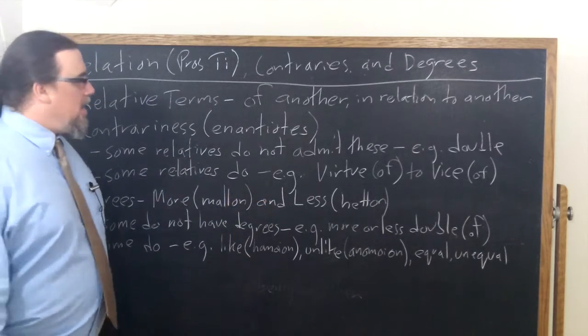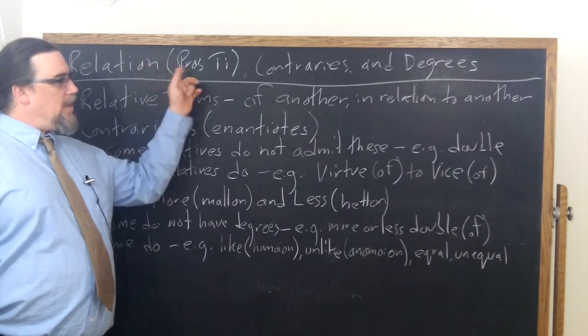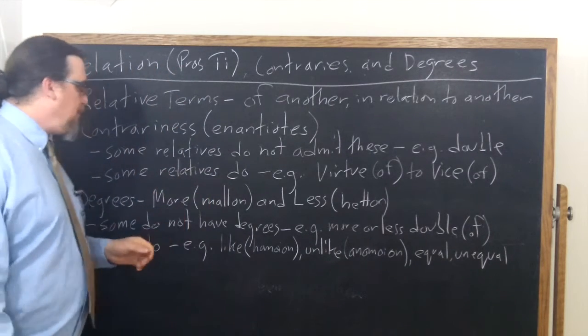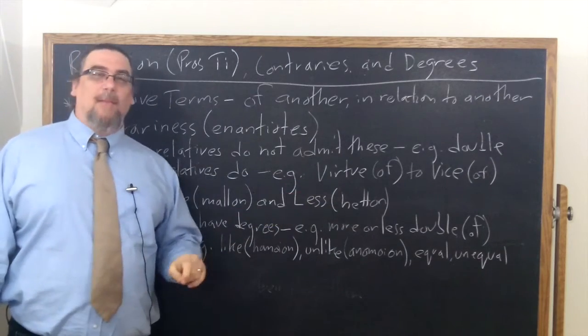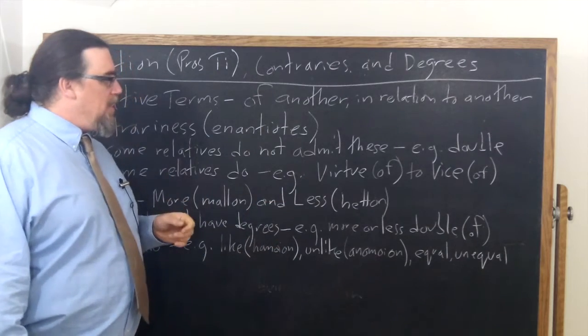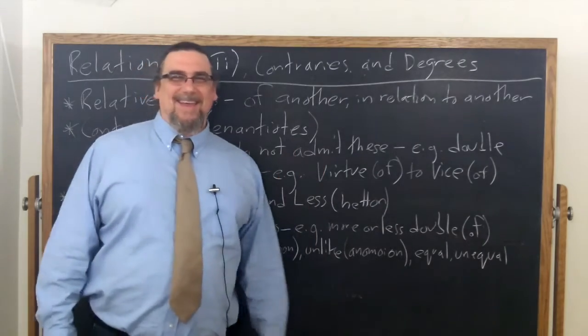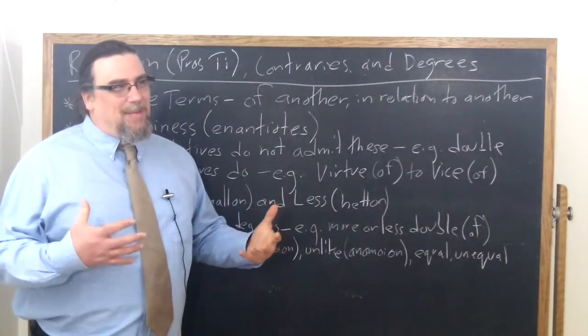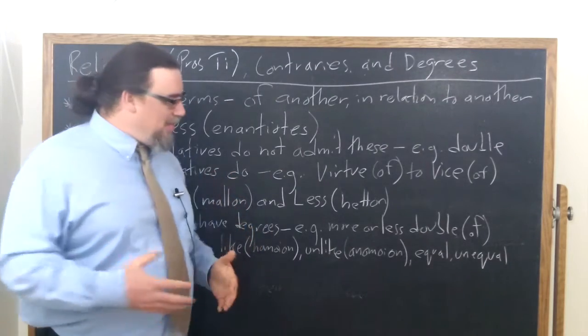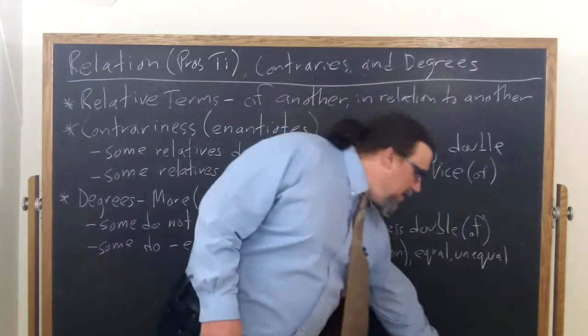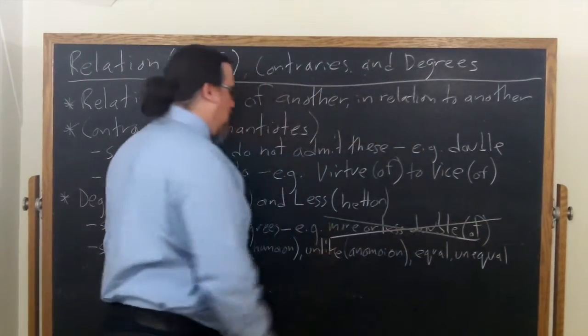So what about that? When it comes to a greater and a less, do relational terms admit of that? Aristotle says, look, some don't have degrees and notice that he uses the same example, this double. There's no such thing as more or less double of something. You could say you're closer to double, but if you've got the word double on the table, look, it's double. It's two times the thing. You don't get a more or a less. So this doesn't actually work.